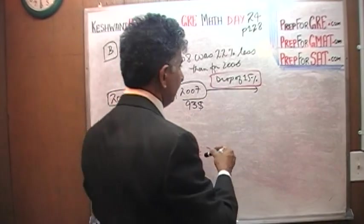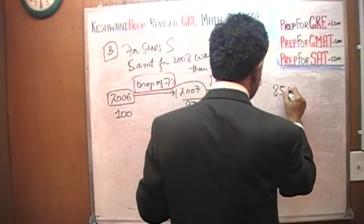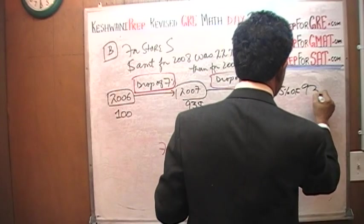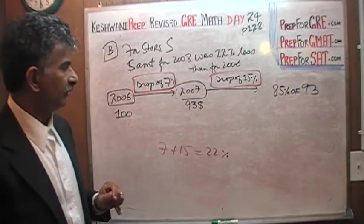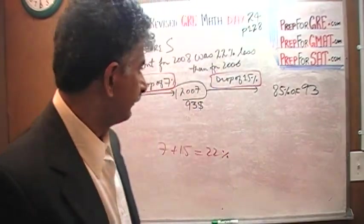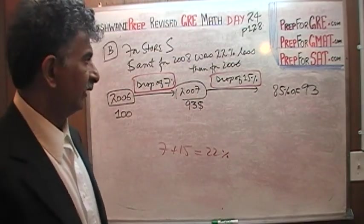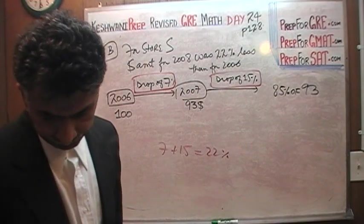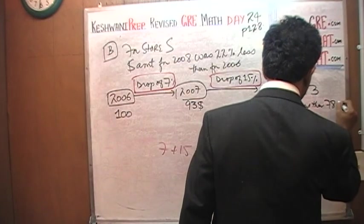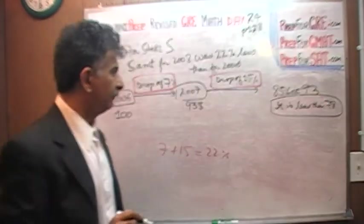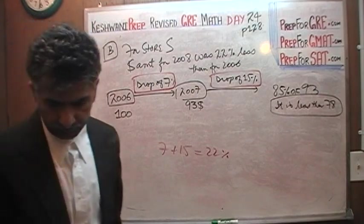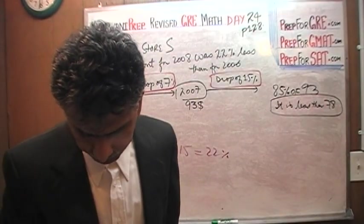So if it drops by 15%, you end up with 85% of not $100 but $93. When you try to figure out a drop of 15%, you will end up with 85% of $93. Now what is the question actually asking? So what is 85% of $93? You will see that it is less than 78. Now where did 78 come from? 78 represents 7 plus 15, that's 22. That figure is less than 78. And how do we know that? Well, let's find out very quickly here.